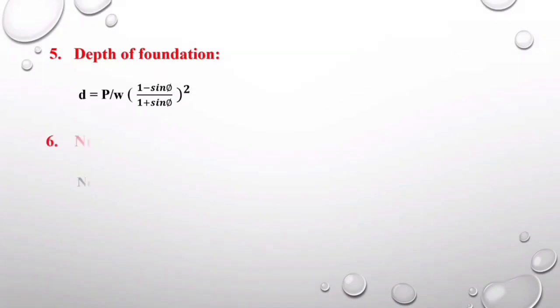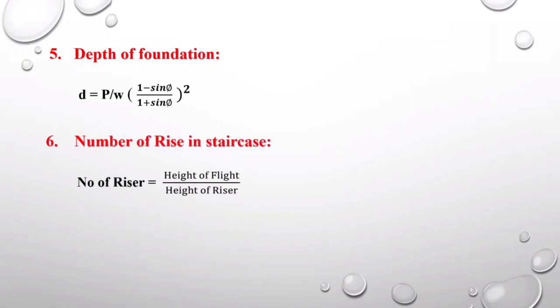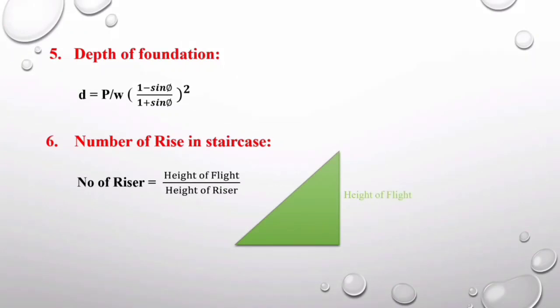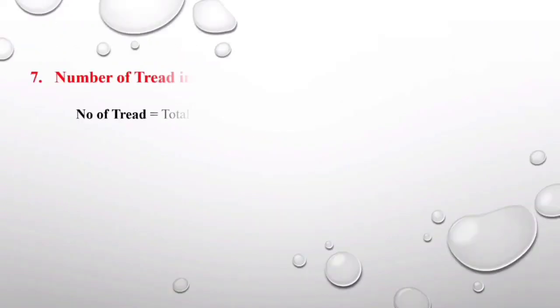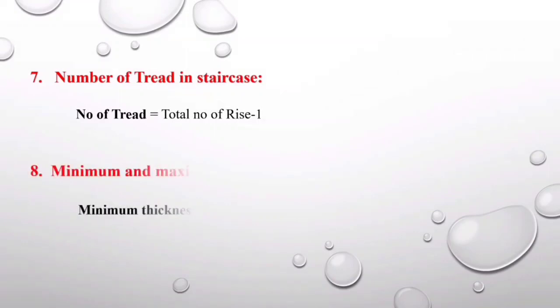Formula six is for finding the number of risers in a staircase: Number of risers = Height of flight / Height of riser. Formula seven is for finding the number of treads: Number of treads = Number of risers − 1.